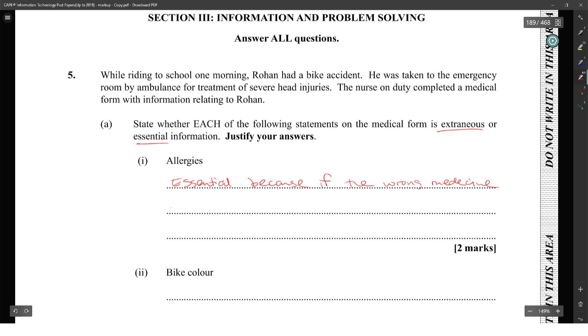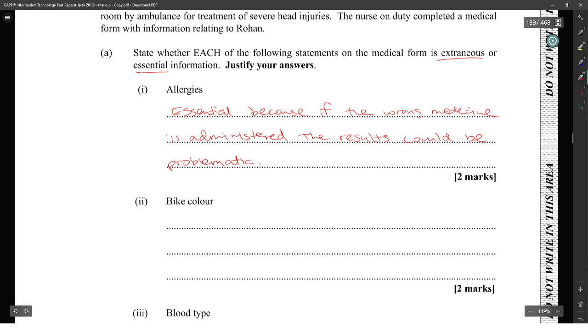Bike color - is that extraneous or essential? Bike color would be cosmetic, so that's extraneous because it has nothing to do with his injury and has no value to the doctor.